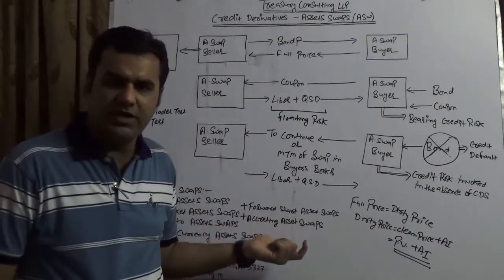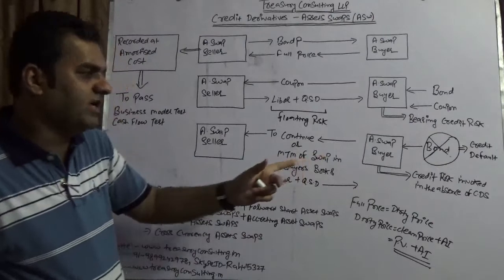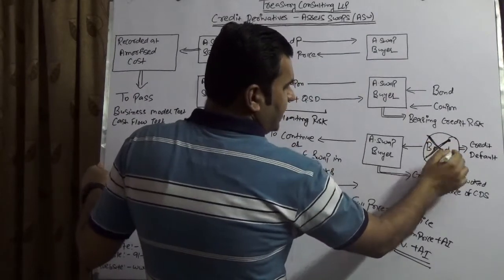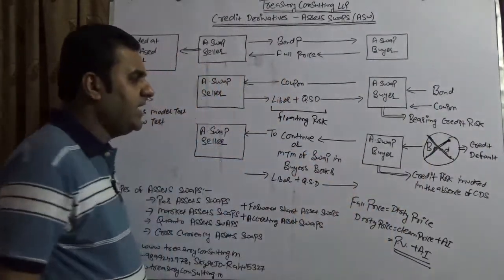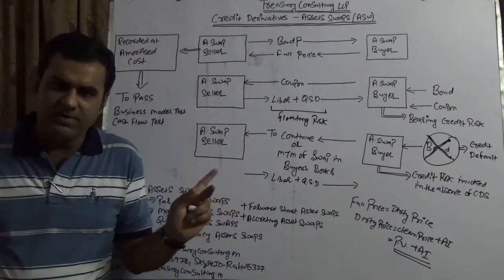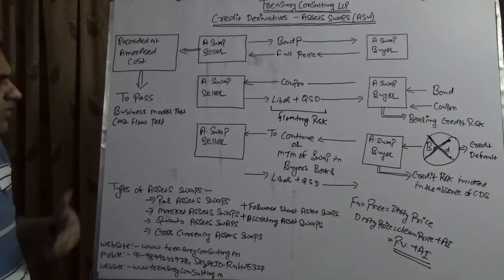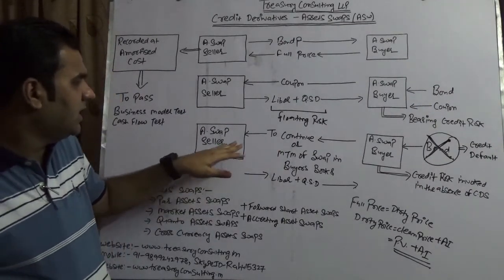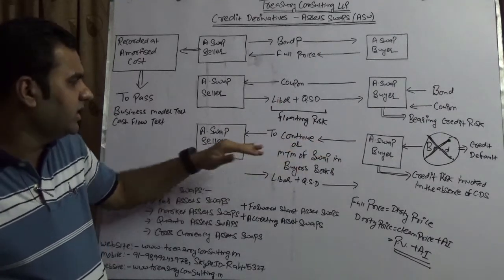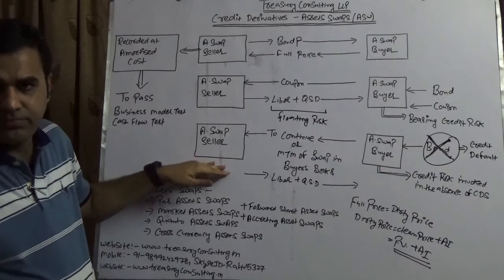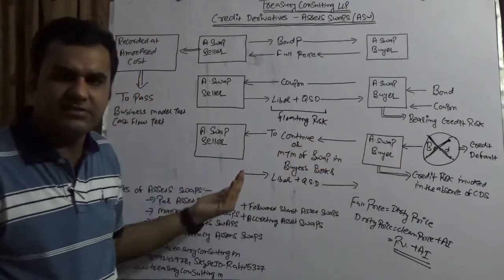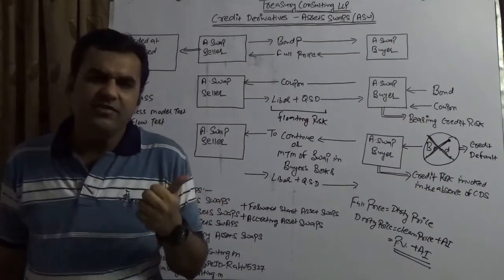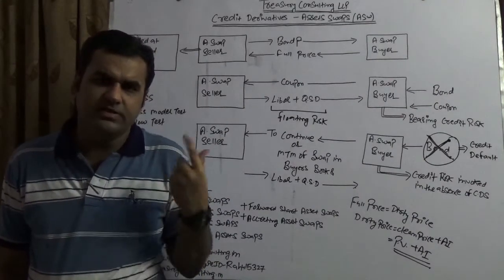It could also be a fixed liability converted to a floating liability. Now suppose the bond defaults — if the bond defaults there is a credit default event, and no QSD is mentioned in case of default. What would happen? The asset swap buyer cannot honor the transaction to the asset swap seller, because the income he was receiving has stopped since the bond has defaulted. He would have two options: either continue paying from his own pocket or from reserves he is maintaining.